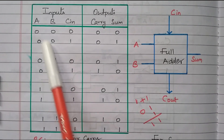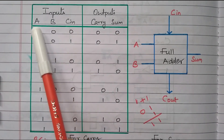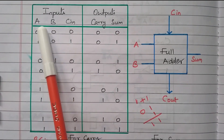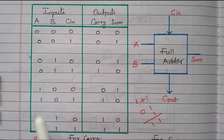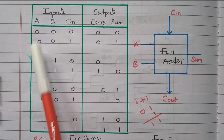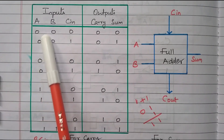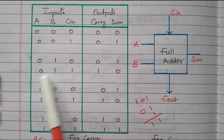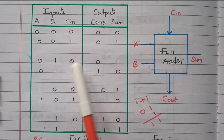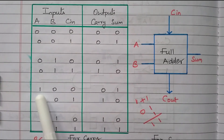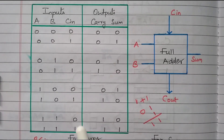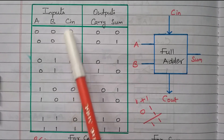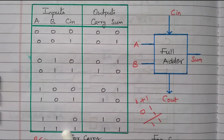First we will look at the two inputs A and B — two inputs mean four combinations: 0-0, 0-1, 1-0, 1-1. For each of these, the carry-in may be 0 or 1, giving eight total combinations.